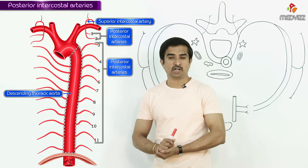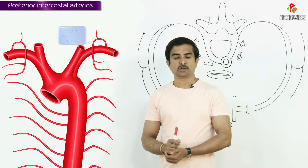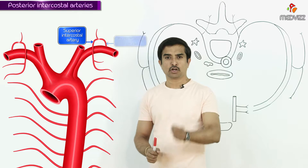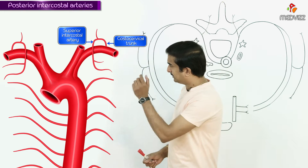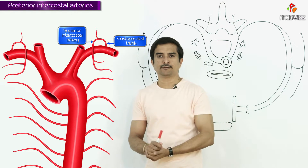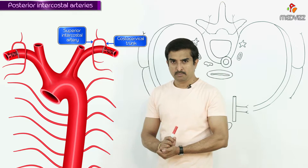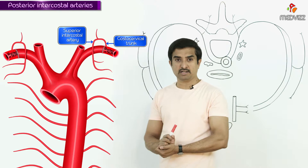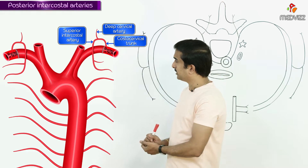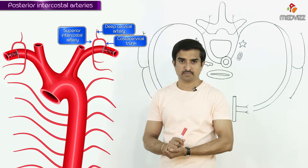The superior intercostal artery is the descending branch of the costocervical trunk. This costocervical trunk arises from the second part of the subclavian artery. The costocervical trunk gives off two branches: one is the deep cervical artery, and the second is the supreme, also called the superior intercostal artery.